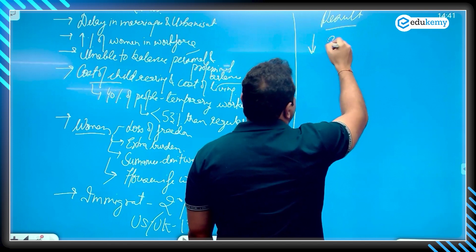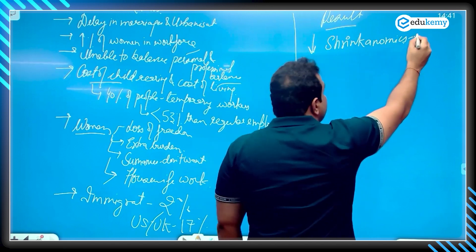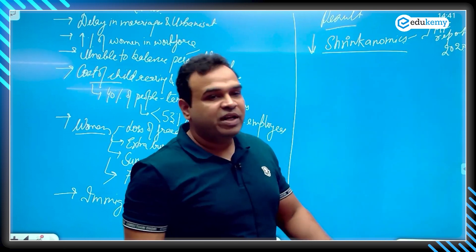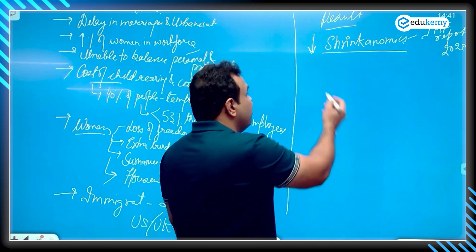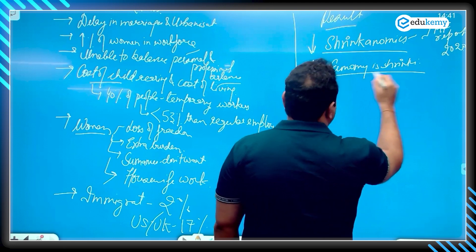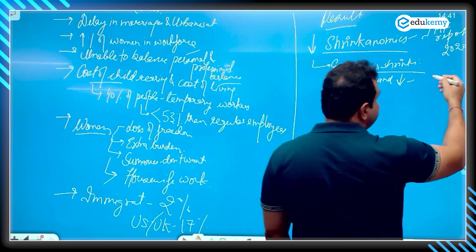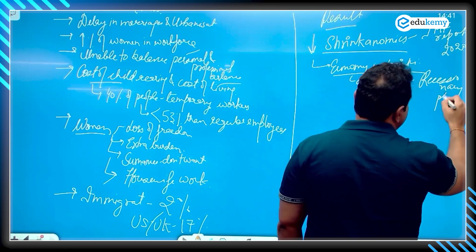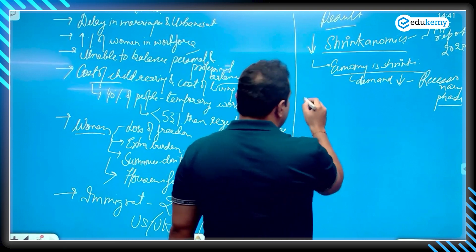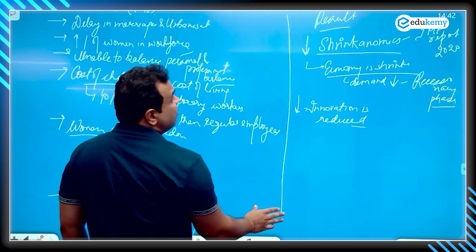One is shrinkonomics. This word has been used for Japan. Shrinkonomics means economy is shrinking. As the economy is shrinking, demand is decreasing. Obviously there would be a recessionary phase.